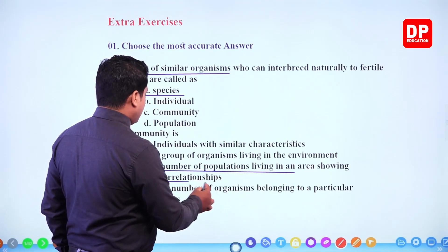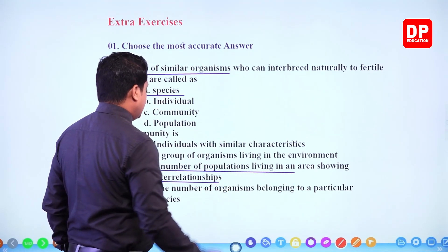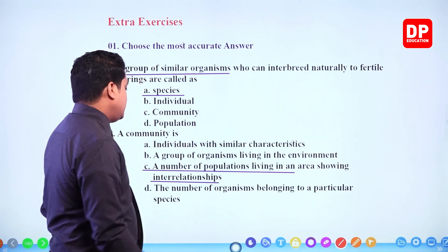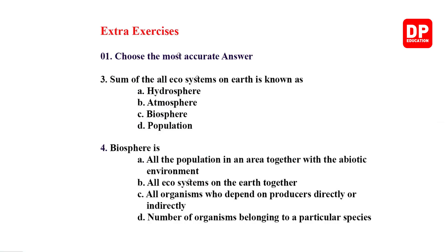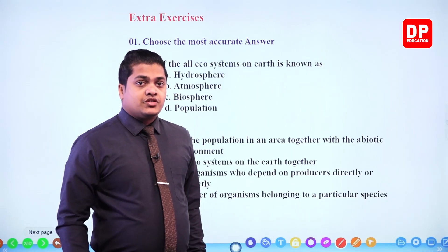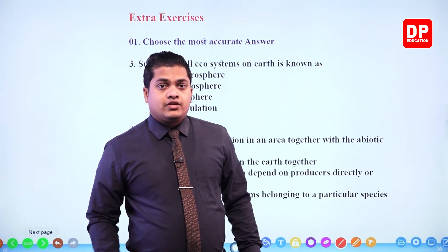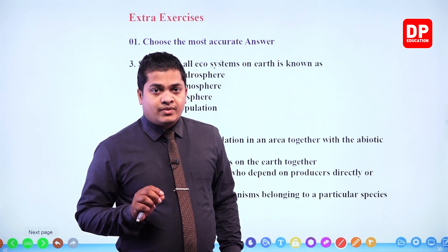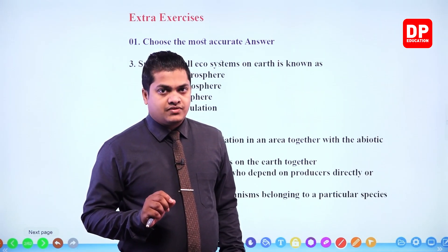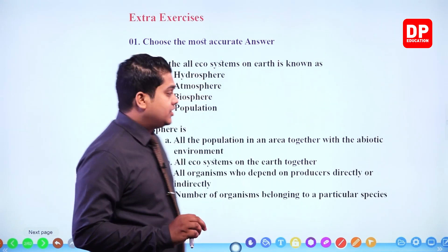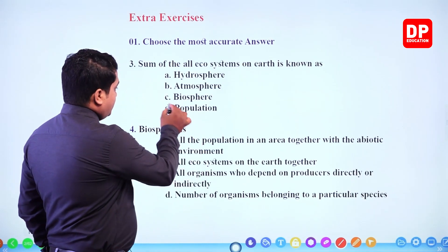Next one: sum of all ecosystems on earth is known as — very simple. The summation of all ecosystems in our planet Earth is referred to as the biosphere. So the answer is biosphere.